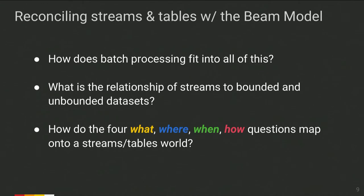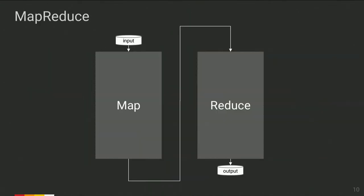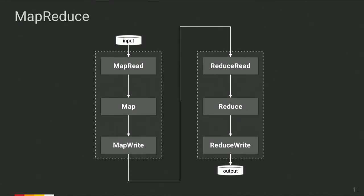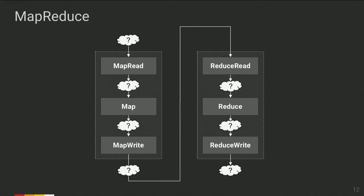Let's start by looking at the classic batch processing example: MapReduce. MapReduce is a data processing paradigm which splits data processing into two steps, Map and Reduce. For our purposes, it's useful to treat this as six different steps. We split Map and Reduce each into three steps: a Read step, which gets data from the source; an actual processing step, either Map or Reduce; and a Write step, which writes the data output. We will try to answer how data exists between those steps — is it a table or is it a stream?